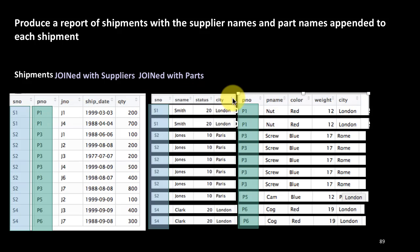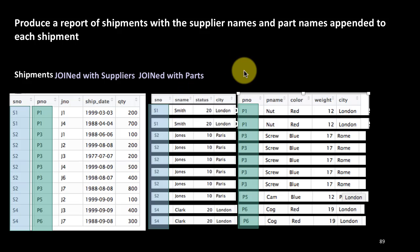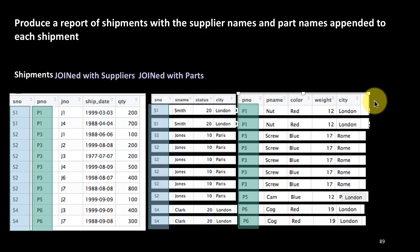We also want the part name added. So for every shipment, we get the part number and append the appropriate details from the parts table. The first row was part P1, the second row was also P1, the third row is P3, and so on. Just like how we added supplier details, we are adding the part details. In this case we've joined three tibbles: shipments, suppliers, and parts. Conceptually, you can think of it as first creating one big combined table and then operating from that.